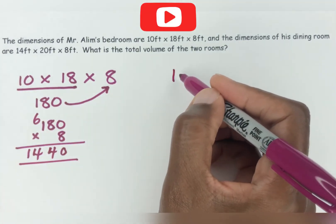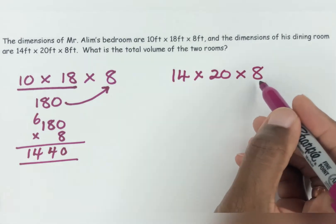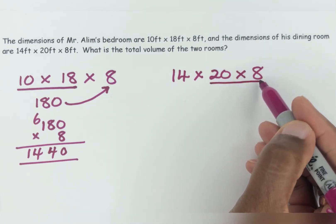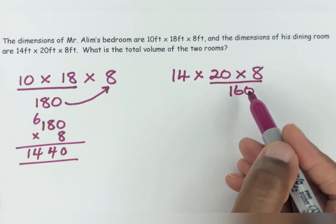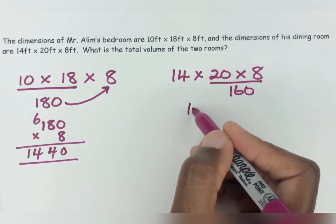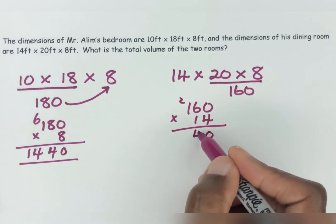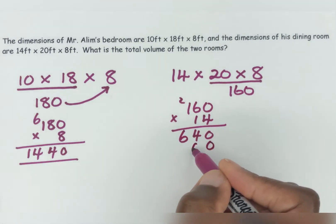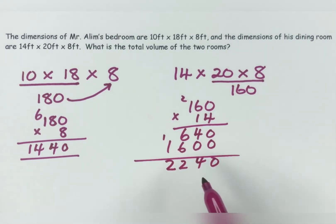And then the volume of his dining room: 14 by 20 by 8. So 20 times 8 — 2 times 8 is 16, plus the zero — that's 160. Then all you need to do is 160 times 14. It doesn't matter in which order you multiply; they're going to give you the same answer whether it's 14 by 20 by 8 or 20 by 8 by 14. Working through 160 times 14, that gives us 2,240.